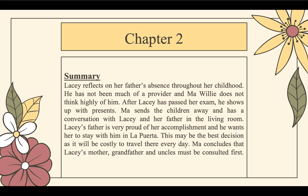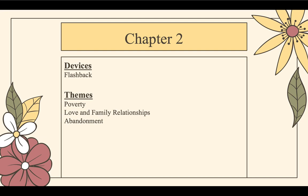Summary: Lacey reflects on her father's absence throughout her childhood. He has not been much of a provider and Ma Willy does not think highly of him. After Lacey has passed her exam, he shows up with presents. Ma sends the children away and has a conversation with Lacey and her father in the living room. He is very proud of her accomplishment and wants her to stay with him in La Puerta. Ma concludes that Lacey's mother, grandfather, and uncles must be consulted first. Devices: flashback again. Themes: poverty, love and family relationships, and also abandonment — it is clear that Lacey's father abandoned her in the past, and suddenly he is very interested in her life.